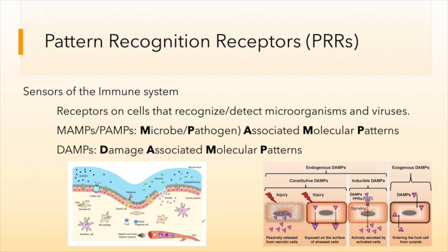MAMPs or PAMPs stand for microbe- or pathogen-associated molecular patterns. These include things like peptidoglycan, flagellin, particular toxins, and LPS or lipopolysaccharide found in the outer lipid layer of gram-negative microorganisms. DAMPs are damage-associated molecular patterns — self-patterns that receptors recognize when there has been cellular damage, usually caused by injury or infection.